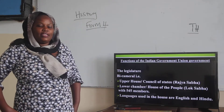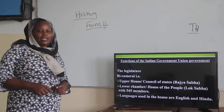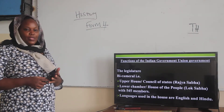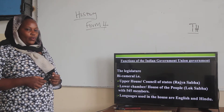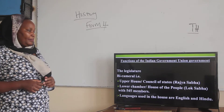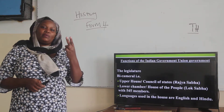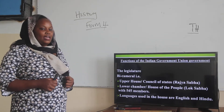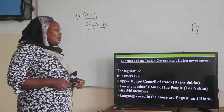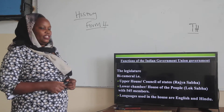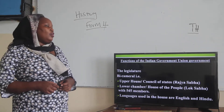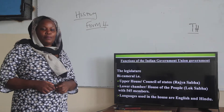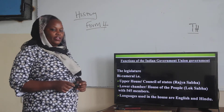What are the functions of the Indian government? It is a federal government, and being a federal government, it has a bicameral parliament — meaning it is made up of two houses. The upper house is also called the Council of States, referred to in Indian language as the Rajya Sabha. The lower house, or lower chamber, is also called the House of the People — the Lok Sabha — which has 545 members.